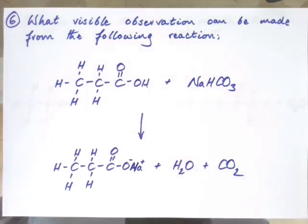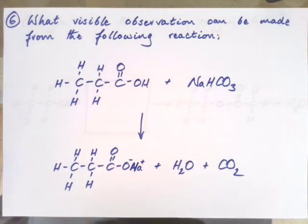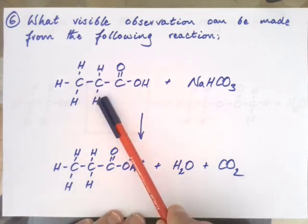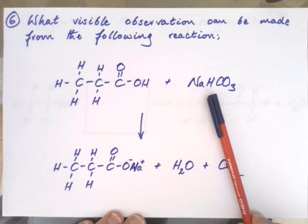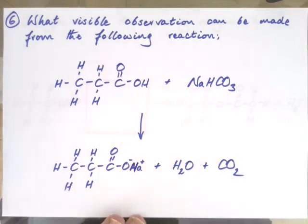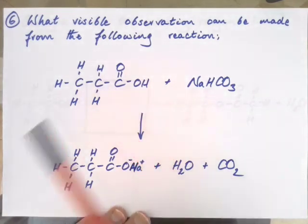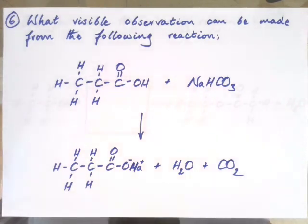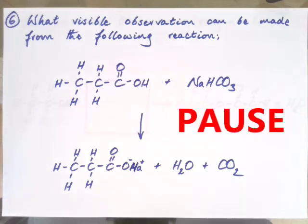Question number six. What visible observation can be made from the following reaction? This is propanoic acid with sodium hydrogen carbonate, giving sodium propanoate, water, and carbon dioxide. This reaction is actually used as a test for identifying carboxylic acid — you'd be able to see something happening in a test tube. Pause the video, have a think about what that would be, and we'll come back to the answer.